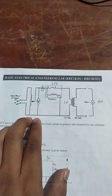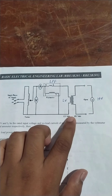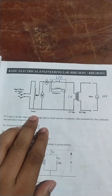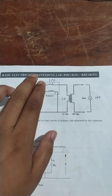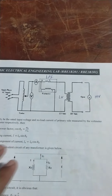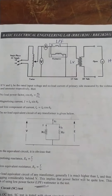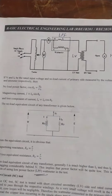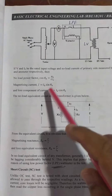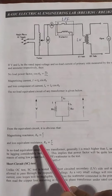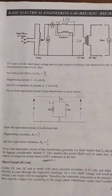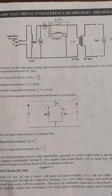We will be applying the rated voltage on the low voltage side, which is 115 volts for this transformer. We will be using an LPF wattmeter because in this condition the power factor will be quite low. By performing this test we can find out the no-load power factor, magnetizing current, and loss component of current, from which we can find the magnetizing reactance and loss equivalent resistance — essentially the core parameters and core loss occurring in the system.